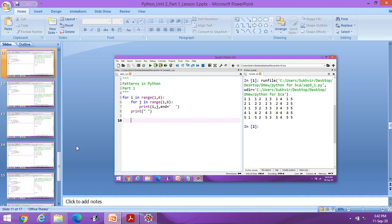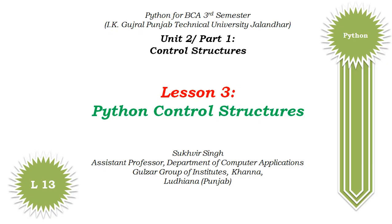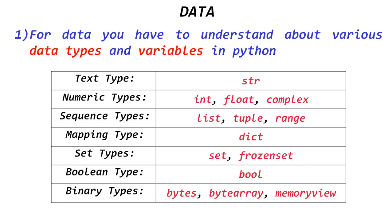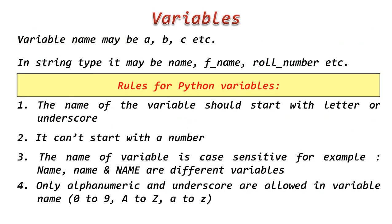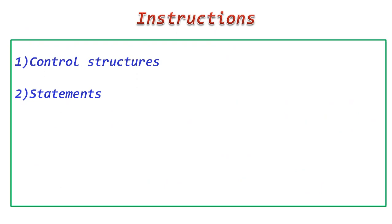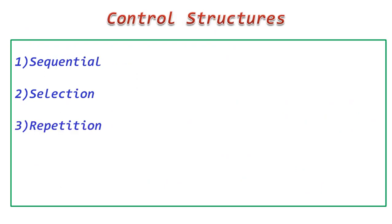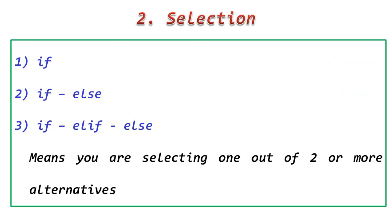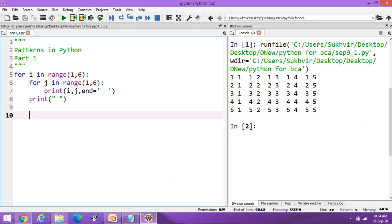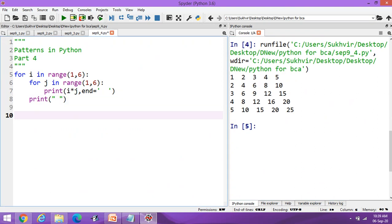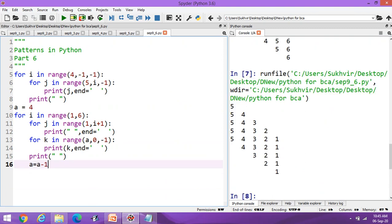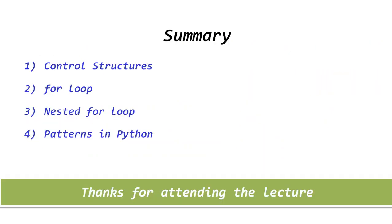To summarize today's video: I covered the definition of control structures, two programming aspects — data and instruction — the various Python data types, variables, control structure types (sequential, selection, repetition), and their definitions. I also demonstrated some practical programs including nested loop patterns, string pattern printing, and a calendar display program. Thanks for attending the lecture.